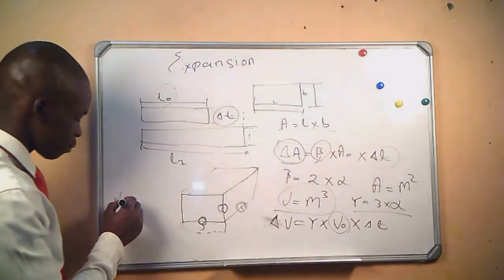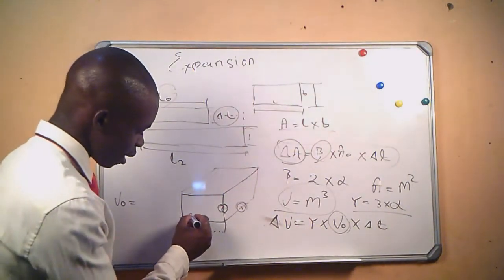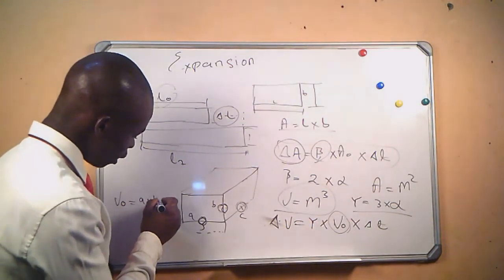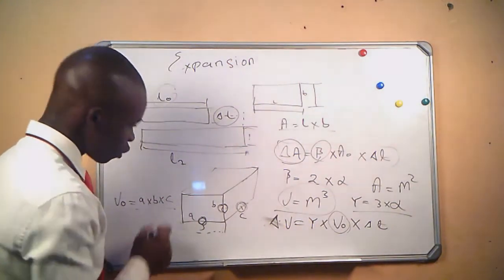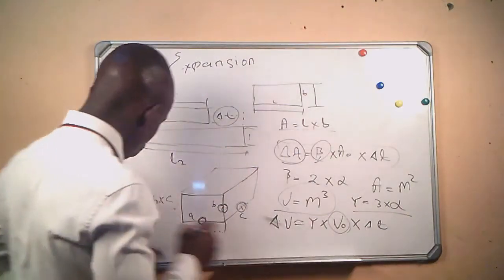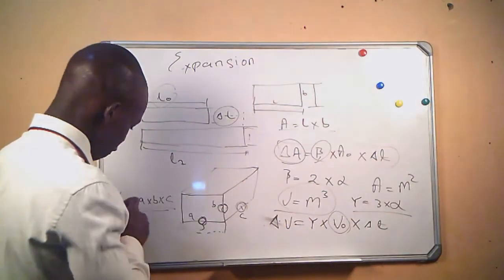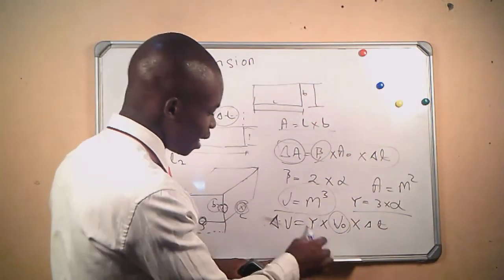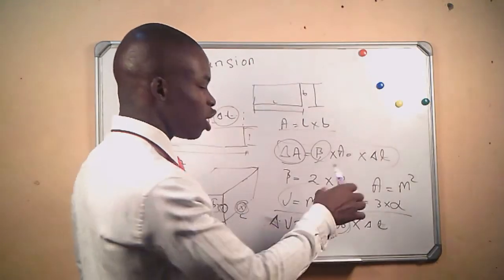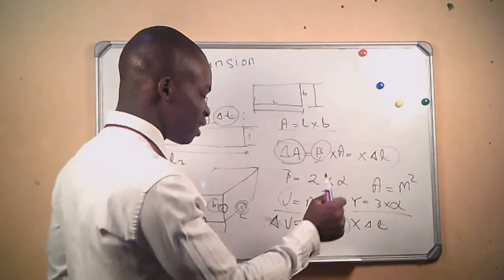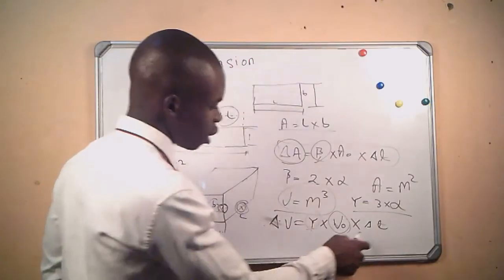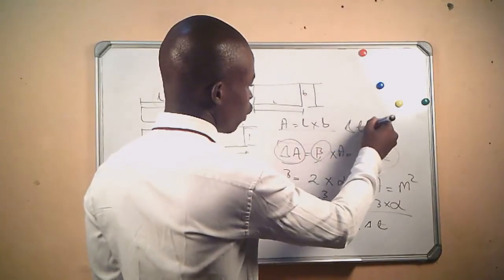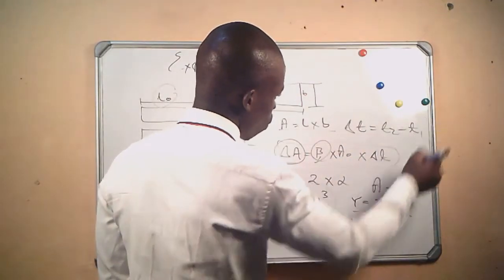Our original volume — let's say the sides are A, B, and C — will be A times B times C. So before you apply this formula, you have to calculate the original volume first by multiplying those three sides. Then multiply by the coefficient of cubic expansion, which is three times the linear expansion coefficient if you are given the linear one. The change in temperature will always be T2 minus T1.